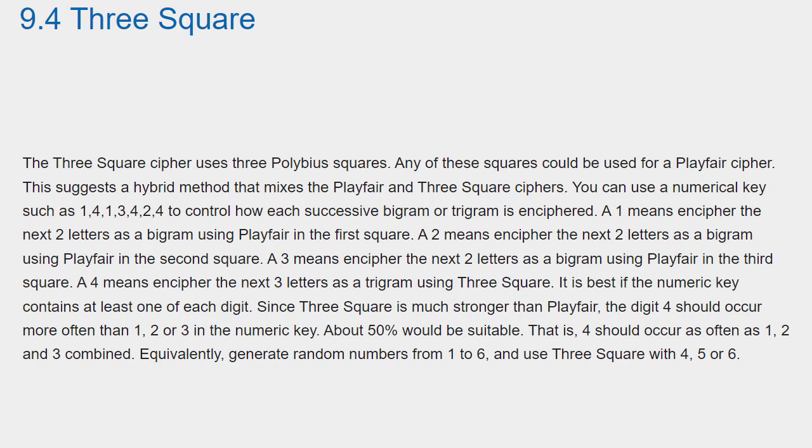A 1 means encipher the next two letters as a bigram using Playfair in the first square. A 2 means encipher the next two letters as a bigram using Playfair in the second square. A 3 means encipher the next two letters as a bigram using Playfair in the third square. A 4 means encipher the next three letters as a trigram using Three Square.